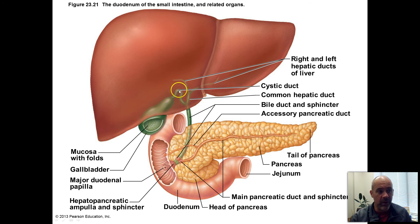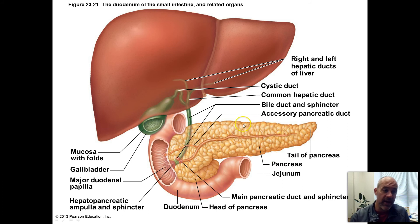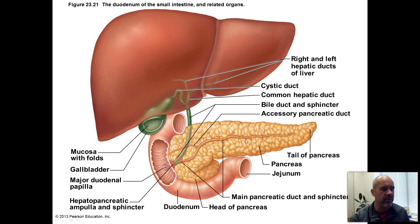Bile is stored in the gallbladder. You have the bile duct which brings that bile down behind the pancreas and squirts it through this opening. The hepatopancreatic sphincter opens this opening, allowing bile to squirt into the duodenum. The pancreas has lots of cells that produce pancreatic juice containing many enzymes, which drain into the pancreatic duct shown in brown inside the pancreas. That merges with the bile duct, and pancreatic juice also gets squirted into the duodenum. So those liver and pancreas substances are going to help us with digestion.